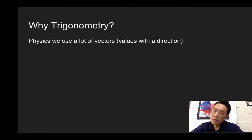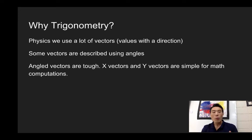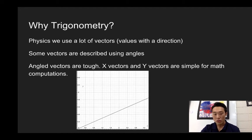Well, here's the thing. In physics, we use a lot of vectors, aka values with a direction. And some vectors are described while using angles. Now, between you and me, angle vectors are tough to do very simple math with. And so what we do is we take those angles, and we break it down into x vectors and y vectors, because those are simple for our mathematical computations.